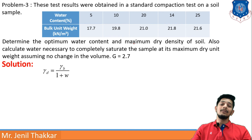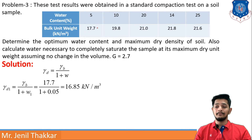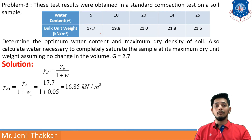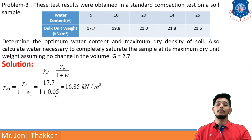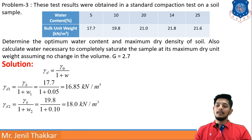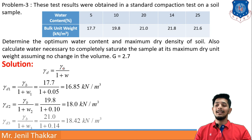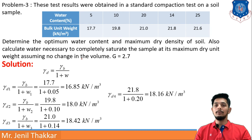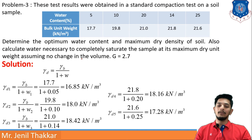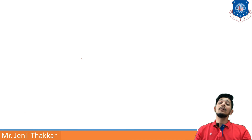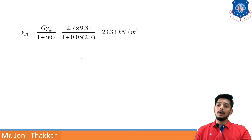First, convert all bulk unit weights to dry unit weights using γd = γb / (1 + w), remembering to express w as a decimal. The results are: γd1 = 16.85, γd2 = 18.00, γd3 = 18.42, γd4 = 18.16, and γd5 = 17.28 kN/m³.